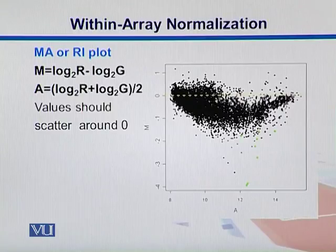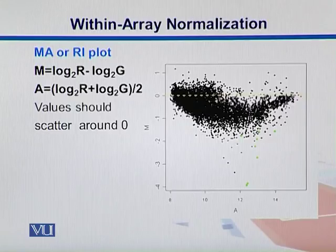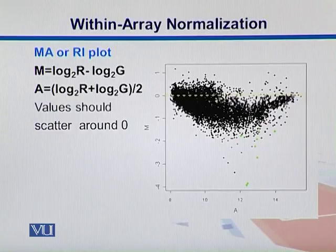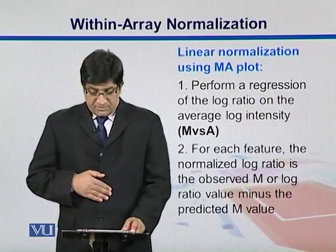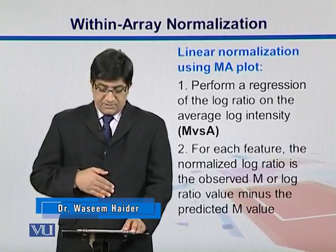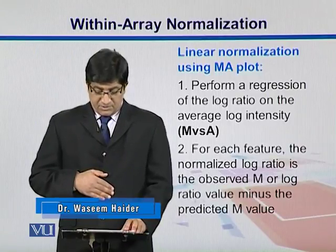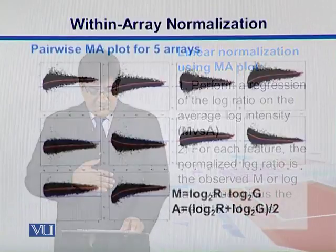In the MA plot, M is defined as log2(R) minus log2(G), where R is red and G is green. A is the average of both log2 values. We take M on the Y axis and A on the X axis, with a zero line in the middle separating both. In an ideal situation, we want our data points to be close to this zero line. We perform regression of those log ratios on the average log intensities, and for each feature, the normalized log ratio is the observed M value minus the predicted M value.